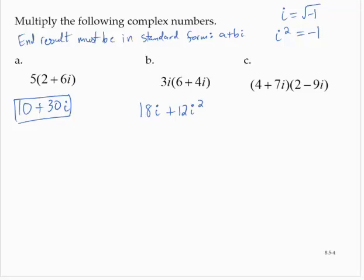So since i squared is negative 1, that's the same as 18i plus 12 times negative 1. Where I made that replacement, i squared is negative 1. So that's 18i minus 12.